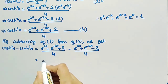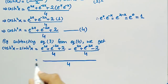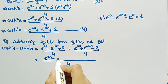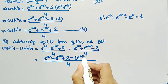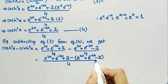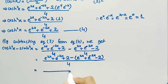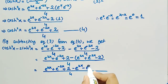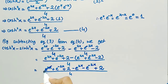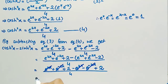Now by taking LCM we get 4 in the denominator, and in the numerator the terms are: e^(2x) plus e^(−2x) plus 2 minus (e^(2x) plus e^(−2x) minus 2). The positive e^(2x) cancels with minus e^(2x), and e^(−2x) cancels likewise, and we are left with 2 plus 2 = 4, divided by 4, which equals 1.